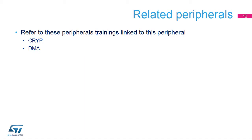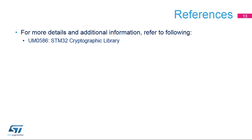This is a list of peripherals related to the hash processor. Please refer to crypt-peripheral trainings if you want to know more about cryptographic engines. Refer to training on the DMA peripheral for information on how to configure the hash channel. For more details, please refer to this user manual available on our website.